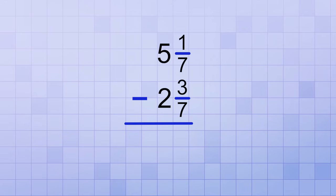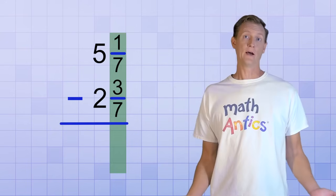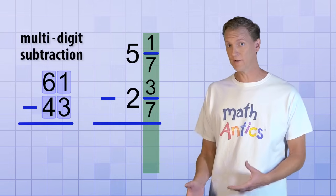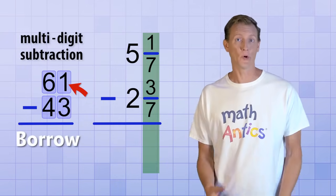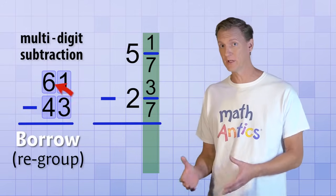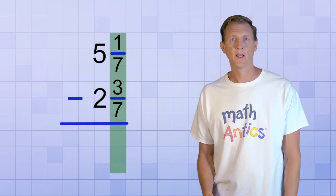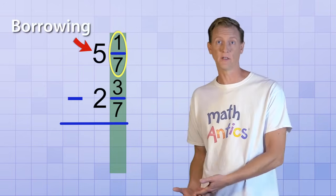But when we try to subtract the fractions column, you'll see that we have a little problem. 1 seventh is less than 3 sevenths, so we can't subtract it without getting a negative number, which we'd really like to avoid. So what do we do now? Well, do you remember what you do in multi-digit subtraction when you have to subtract a bigger digit from a smaller one? Yup, you borrow from the column to the left. And we can do something really similar to that with mixed numbers. We can make the fraction part of a mixed number bigger by borrowing from the whole number part.